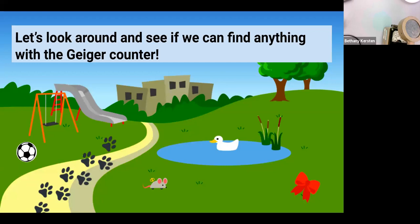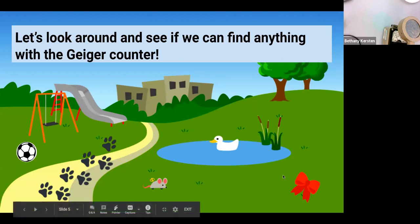So let's use the Geiger counter to see what might be radioactive. Do you see anything in the park we can test for radioactivity? If you do, type it in the chat. Ah, the mouse. Yeah, so we can test the mouse. Is there anything else we might want to test? Maybe the paw prints. We can test the paw prints and the mouse. All right, so let's start there. Let's test the mouse and the paw prints, and if we need to we can come back and find some more things.